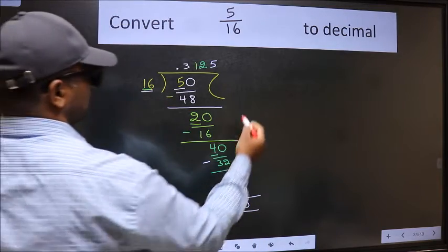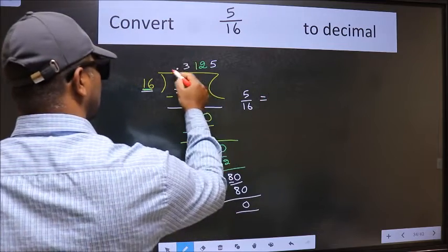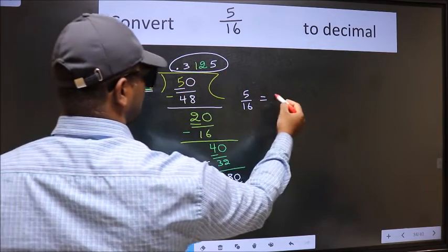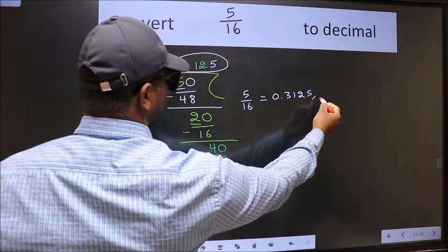Therefore, decimal of 5 by 16 is this one. 0.3125 is our answer.